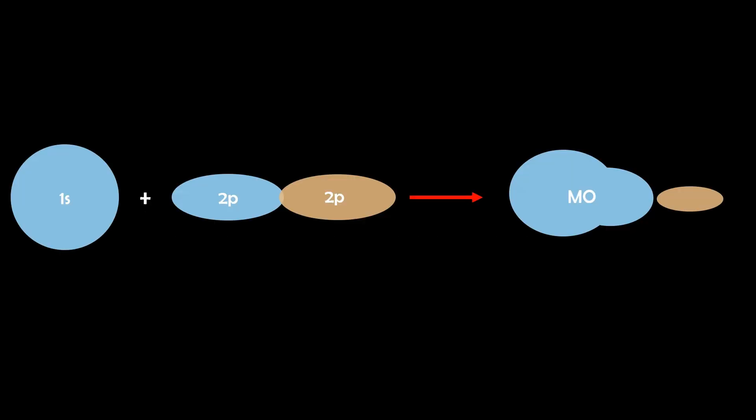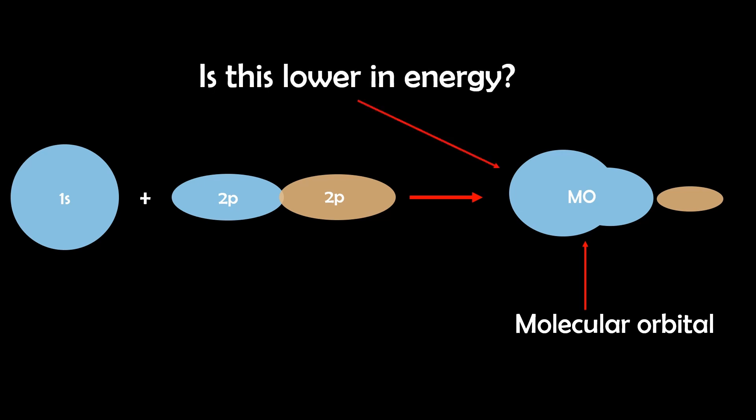Theoretically, any two orbitals can overlap to form a molecular orbital, which is basically a new region of electron density where electrons are shared between atoms. The key to whether a bond forms is whether this overlap creates a lower energy system and stabilizes the molecule.